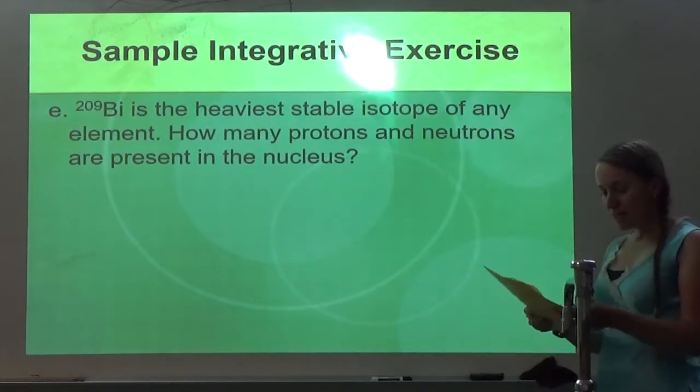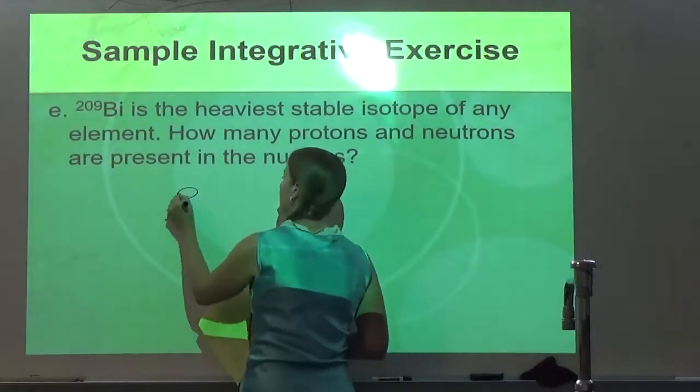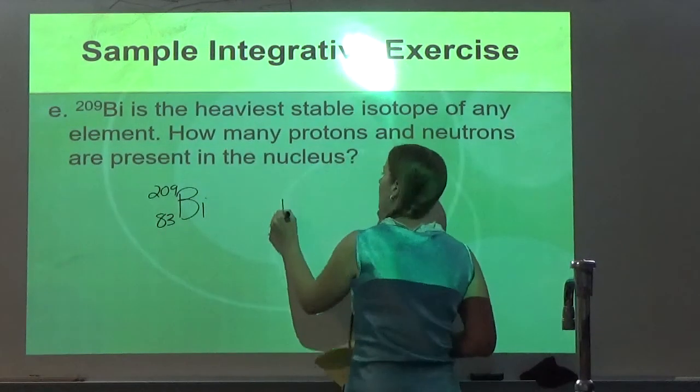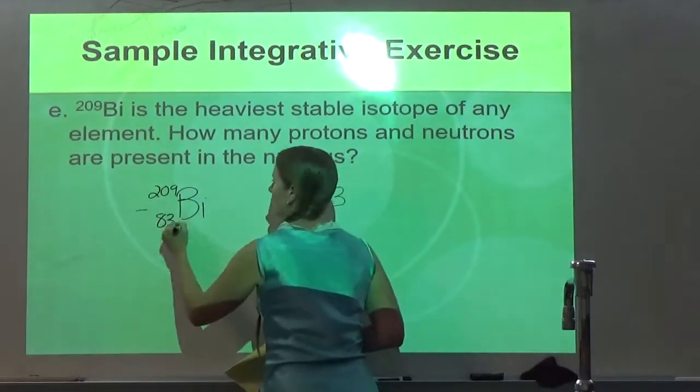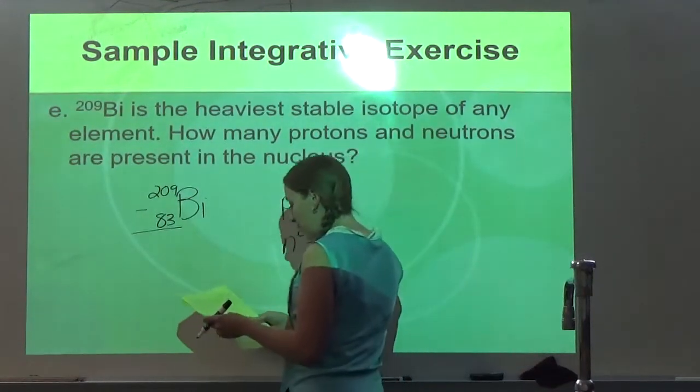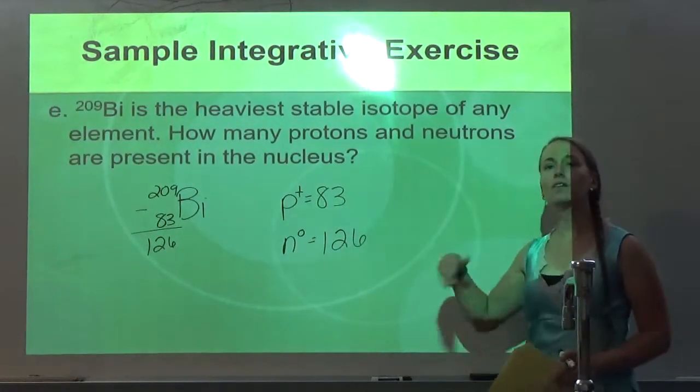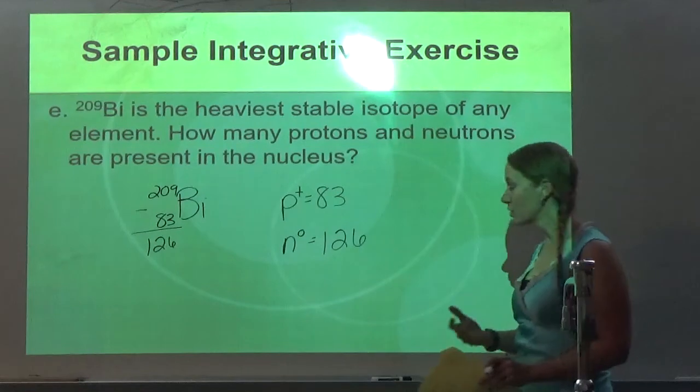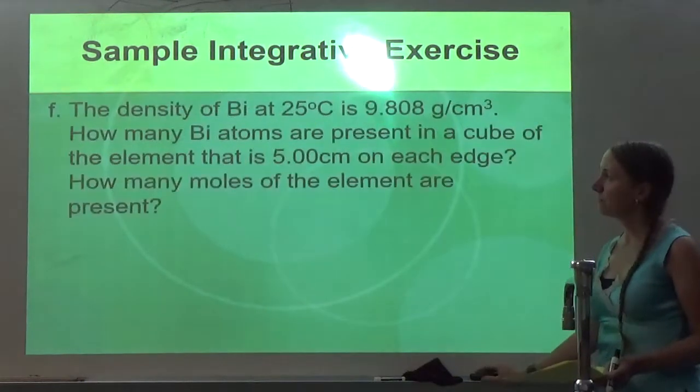So part E. We have bismuth 209 is the heaviest stable isotope of any element. How many protons and neutrons are present in the nucleus? It's bismuth 209, so I look at the periodic table, and I can see that the atomic number is 83. So how many protons? Protons are the atomic number. It's 83. How many neutrons? For neutrons, I just do 209 minus 83, and so I get 126. So it's 126 neutrons. So see, every part of a free response question doesn't have to be hard. And notice it went from harder doing all that stoichiometry to easier. That's another thing some of y'all struggle with, is if they give you an easier one later in the question, it's like you've just given up at that point. So don't do that.